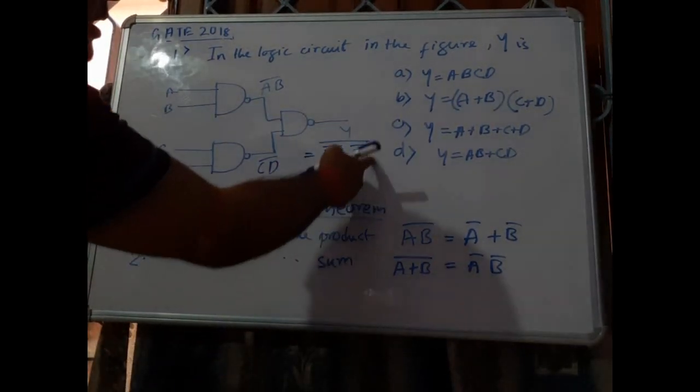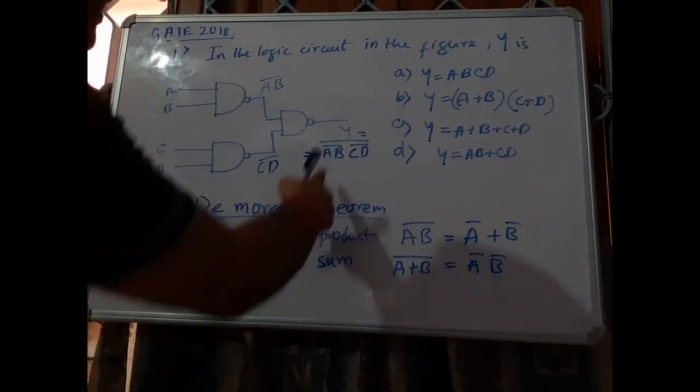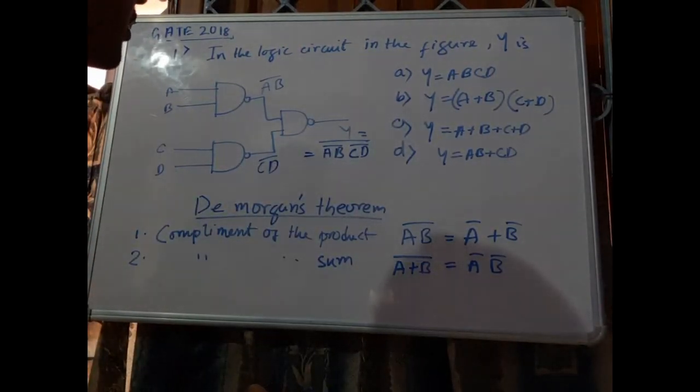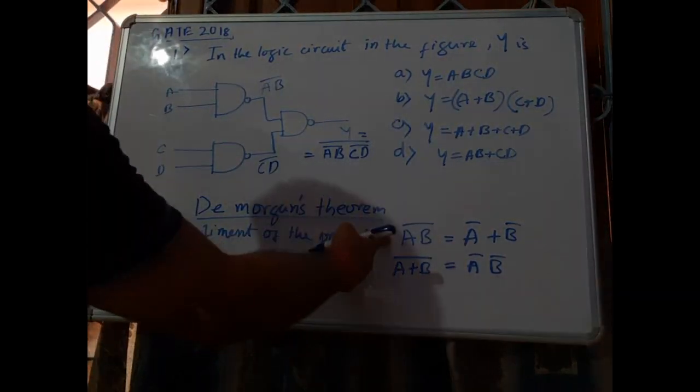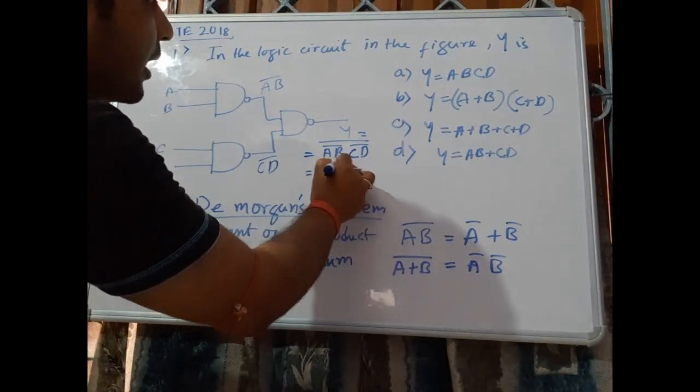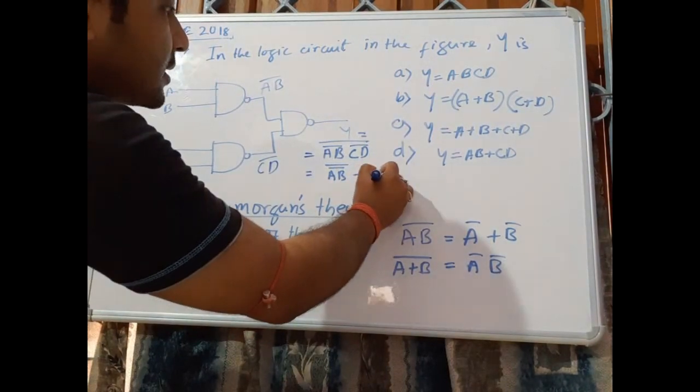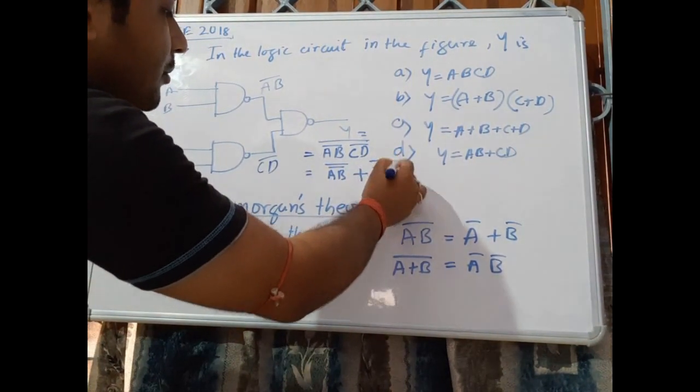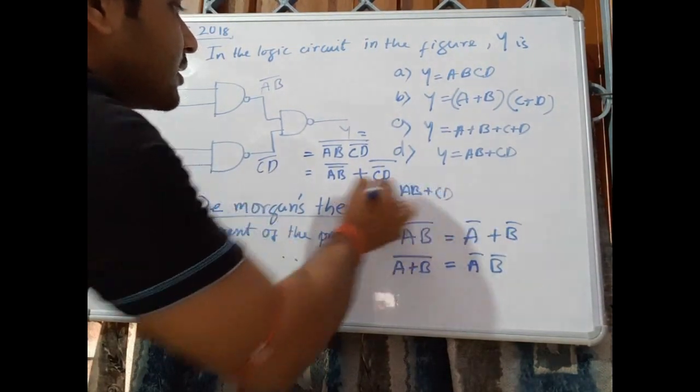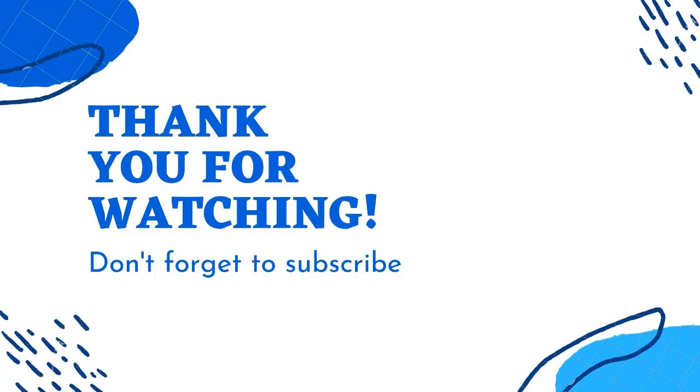So in this equation, y equals a b bar into c d bar whole bar, what we have? We have to take this theorem number 1. So this will be a b bar whole bar plus c d bar whole bar. So this will be a b plus c d. So the correct option is option d.